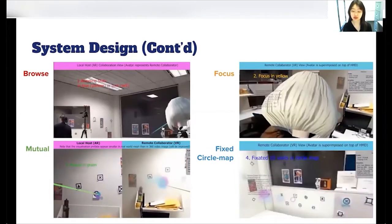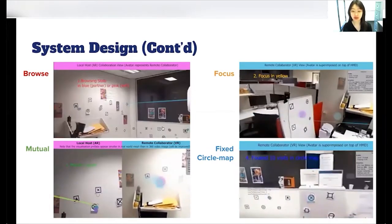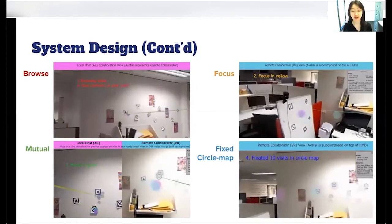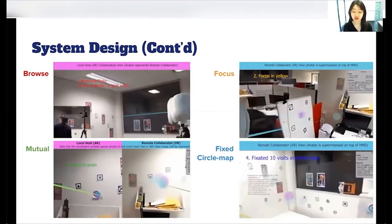Third, mutual state. We switch both collaborators' gaze visualizations into green to indicate joint gaze or gaze overlap.